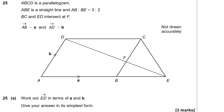So on to vectors. ABCD is a parallelogram. We know that ABE is a straight line and ABE is in the ratio of 3 to 2. So AB to BE is in the ratio of 3 to 2. So BE is going to have to be a fraction of AB. If I take A and divide it by 3 and times it by 2, then BE is going to be 2 thirds of A.